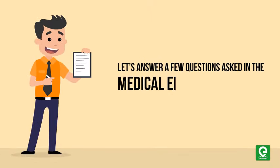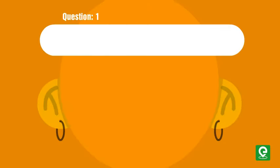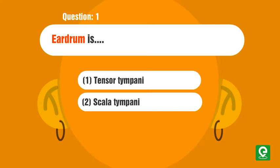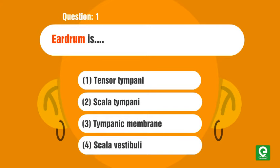Question one: Eardrum is: 1) tensor tympani, 2) scala tympani, 3) tympanic membrane, or 4) scala vestibuli? This question was asked in Delhi PMT 2010.